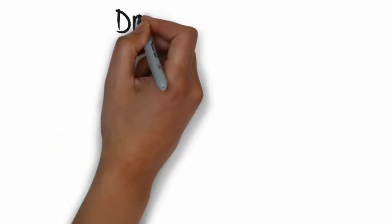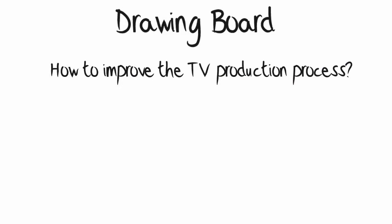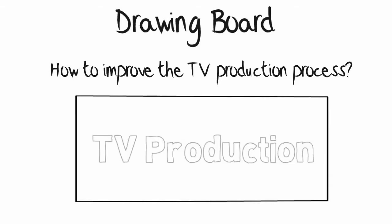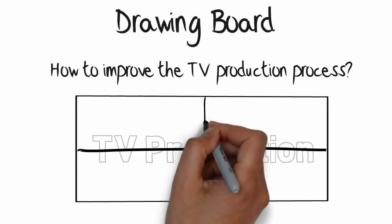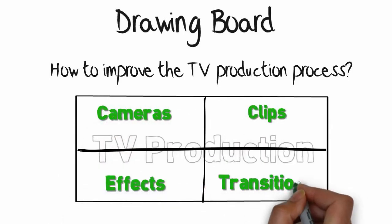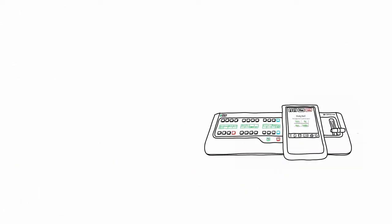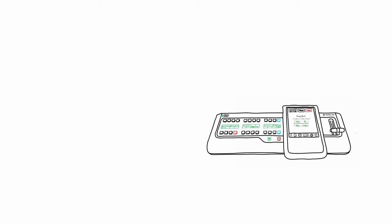In designing GV Director, the team went back to the drawing board and looked at not only how we make television, but how that process could be improved and made more intuitive for anyone creating a TV show. They broke down the elements you need for a live production into four simple building blocks, and designed GV Director around this concept. So let's look at those building blocks and see how GV Director combines them together.